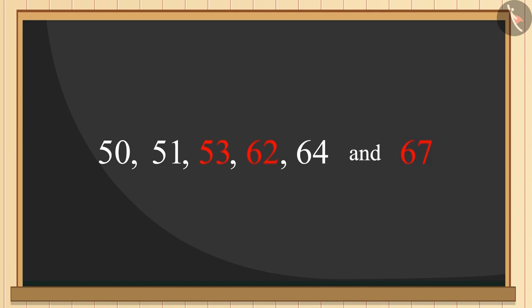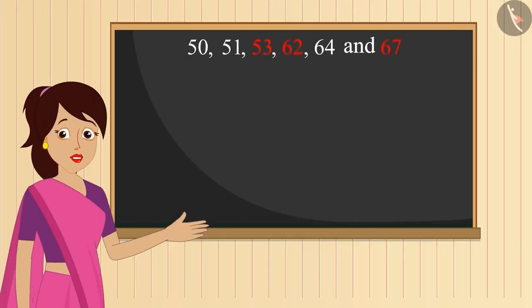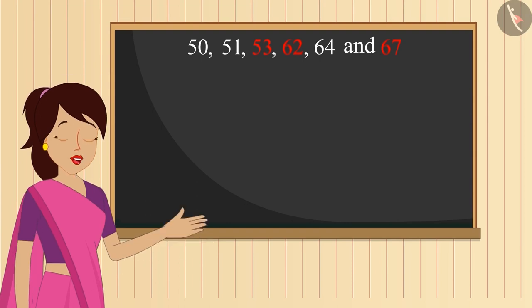Now we have 50, 51 and 64 left. Can you apply properties of the squares on any of the remaining numbers?